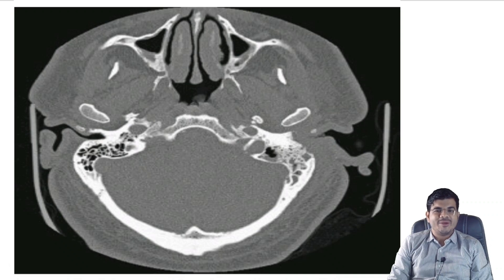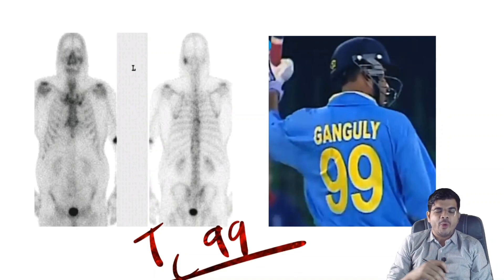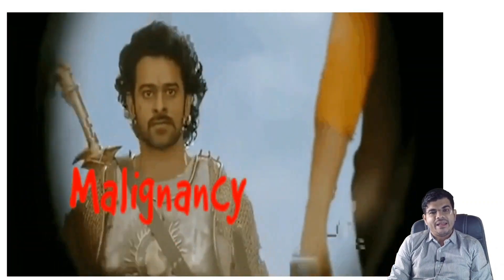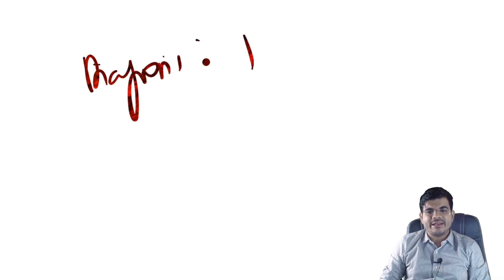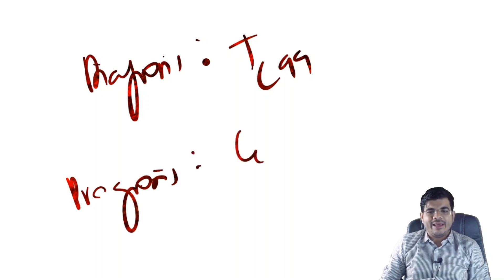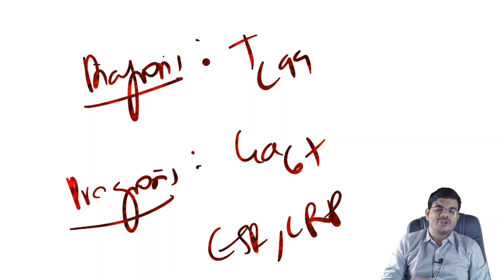X-ray of the temporal bone is the most commonly done investigation, though its utility is restricted to cases where there is more than 30% bone demineralization. Technetium-99 scan is the investigation of choice because it is very sensitive due to its ability to accumulate in areas of high osteoblastic activity, but its specificity is very low and it can be positive in malignancies — so a tissue biopsy must be done to rule out malignancy. Gallium-67 scan is used to monitor treatment response since it accumulates in areas of active inflammation and normalizes with disease resolution. ESR and CRP may also be done to assess prognosis, as they come down with disease resolution.